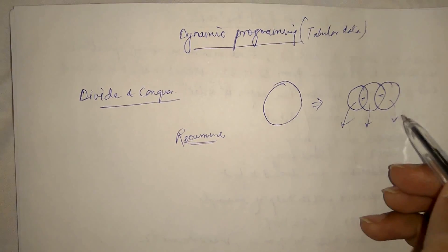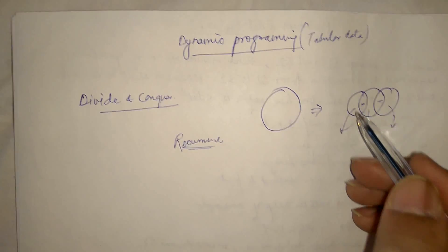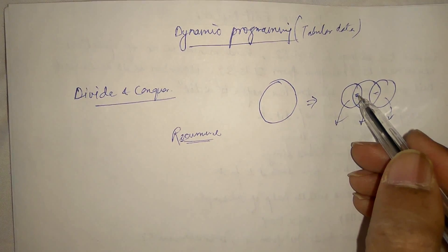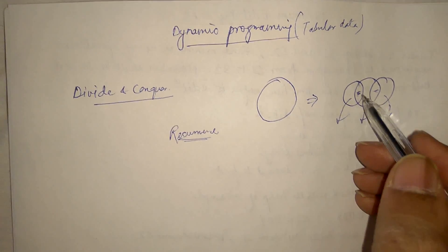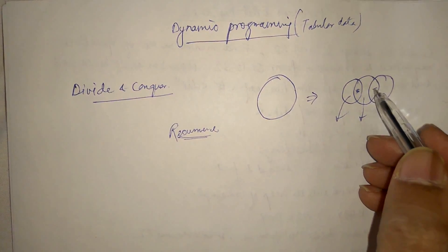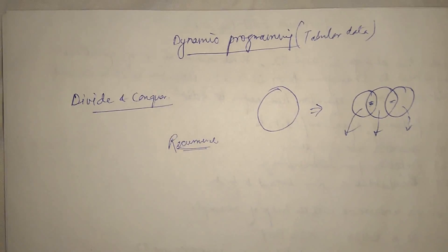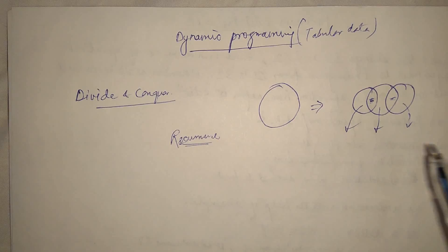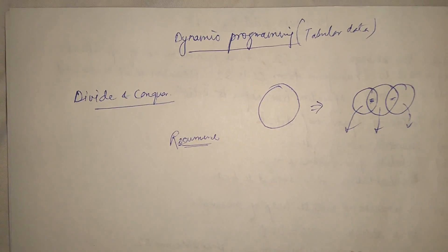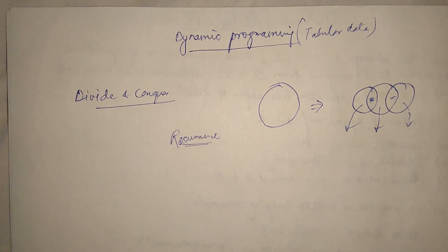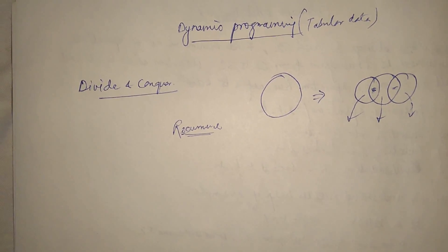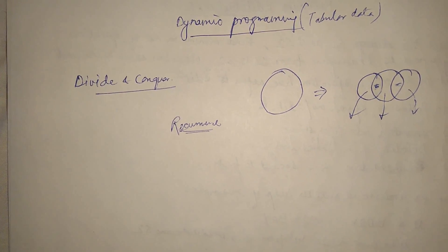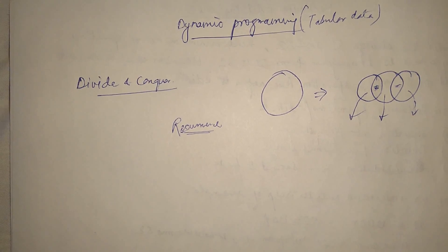We try to resolve this separately, we try to resolve this separately. If you see, this portion is twice resolved, twice solved. This portion is also twice solved. So basically there are overlapping of some common subproblems.